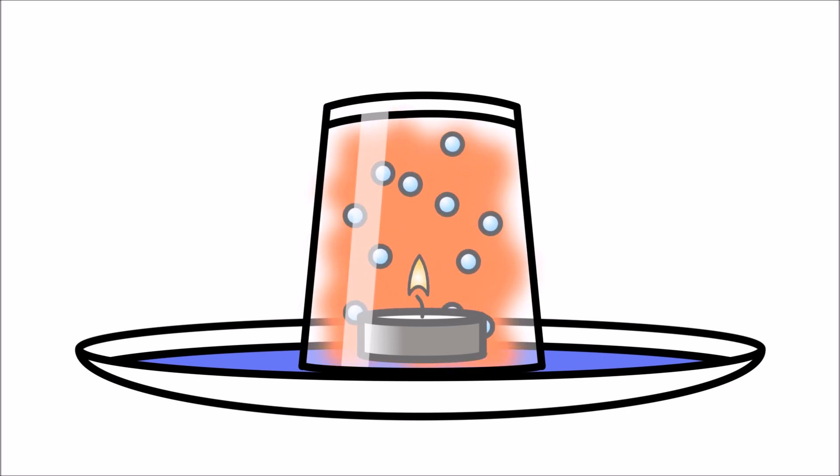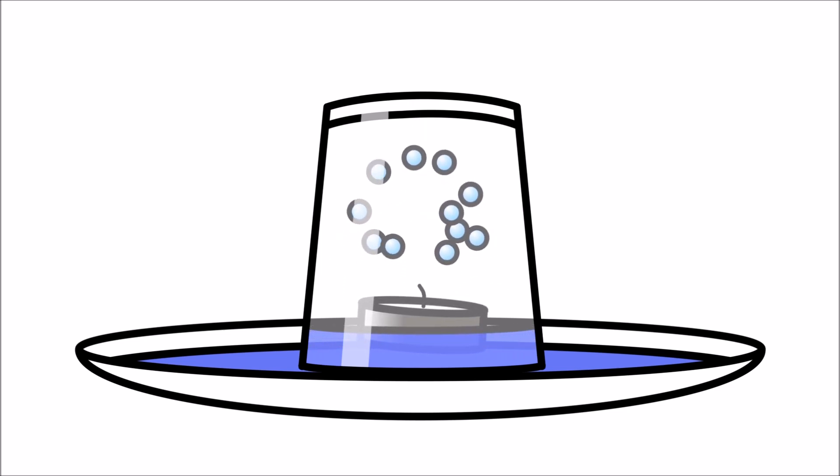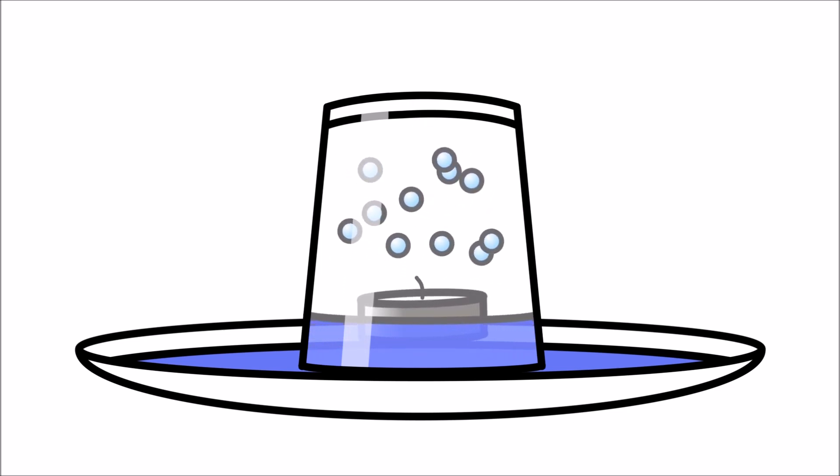When the flame goes out, the air inside the glass cools. The cooler air contracts, which means that it takes up less space. This contraction pulls the water from outside into the glass.